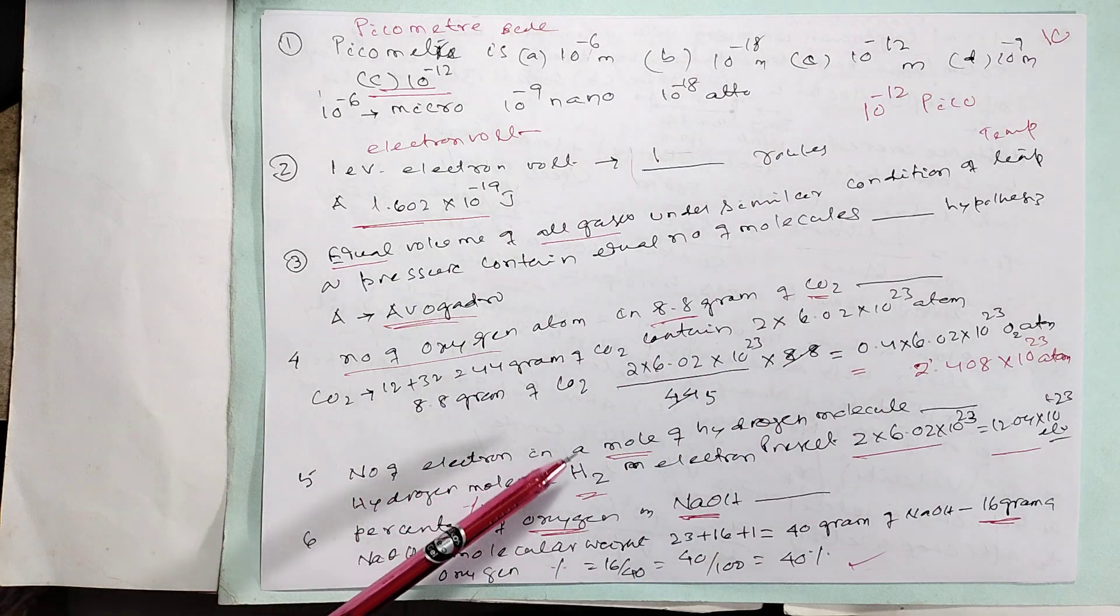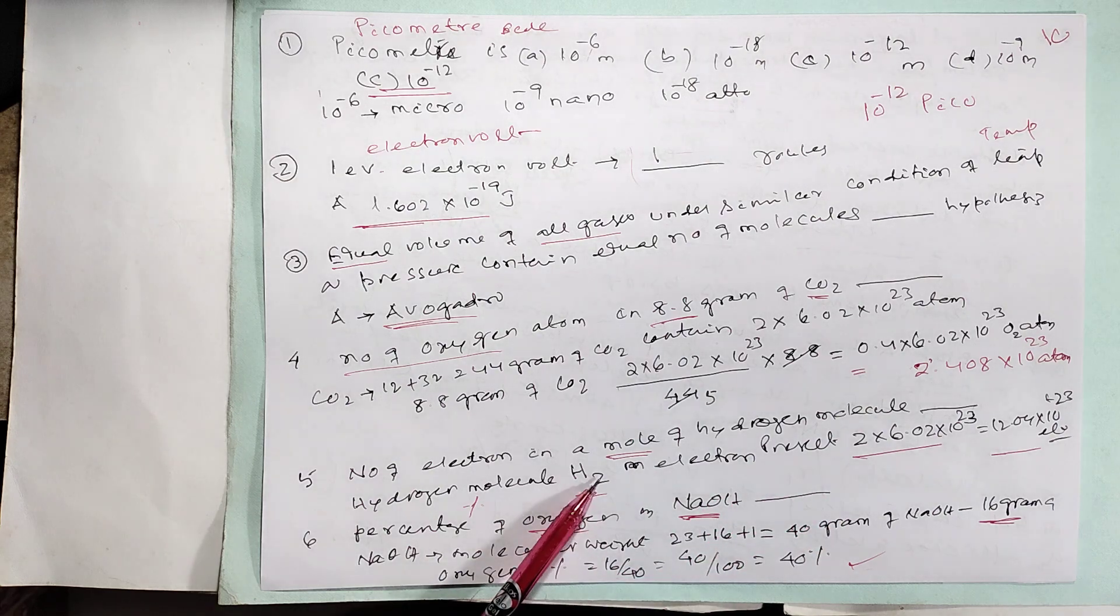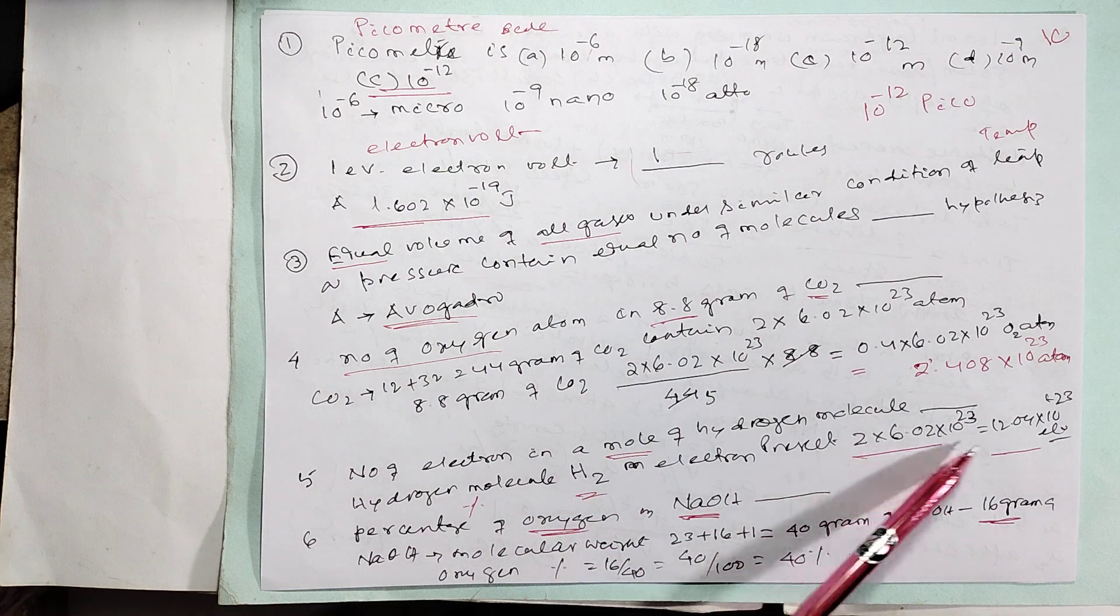Number of electrons in a mole of hydrogen molecule. Hydrogen is H2. That equals Avogadro's number of electrons.